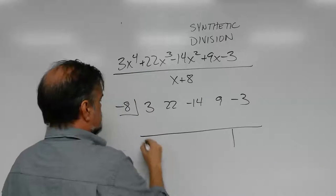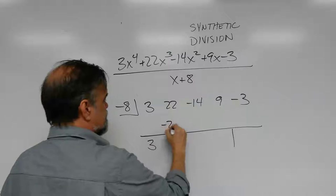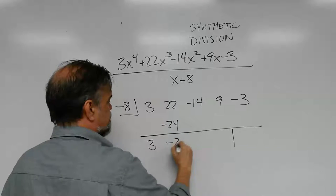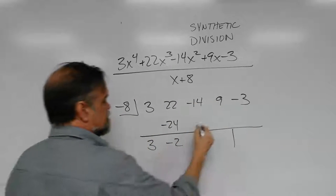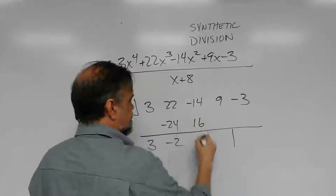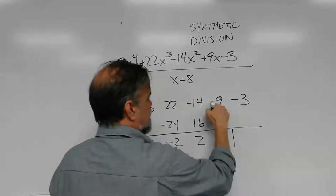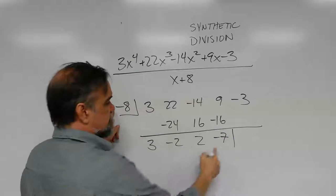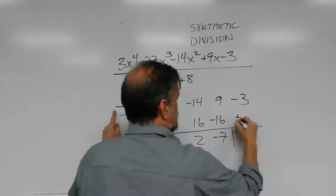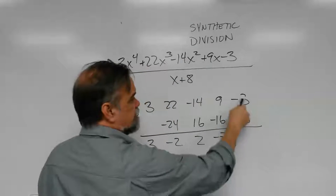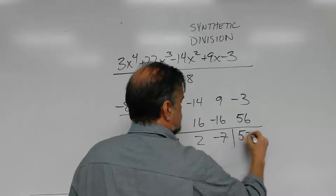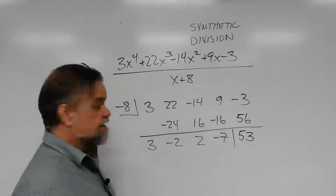Drop down the 3. Negative 8 times 3, negative 24. Add them up, negative 2. Negative 8 times negative 2, 16. Add them up, 2. Negative 8 times 2, negative 16. Add them up, negative 7. Negative 8 times negative 7 is positive 56. And negative 3 plus 56 is 53. And we're done.